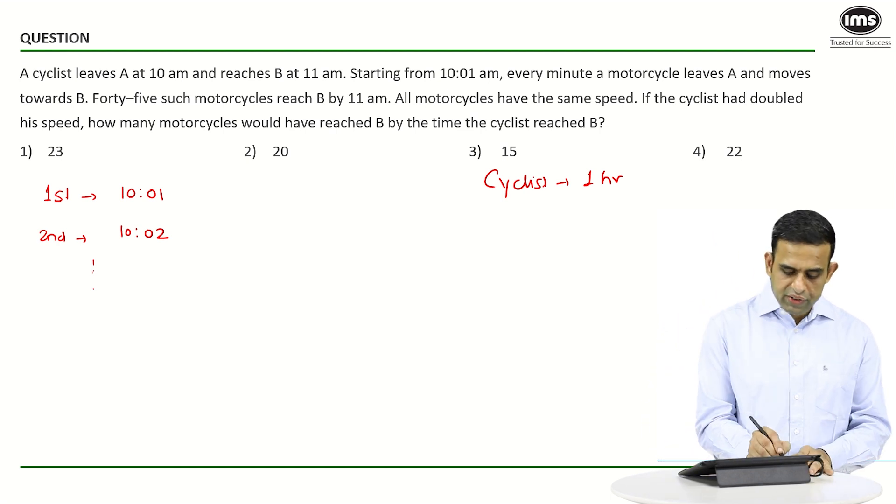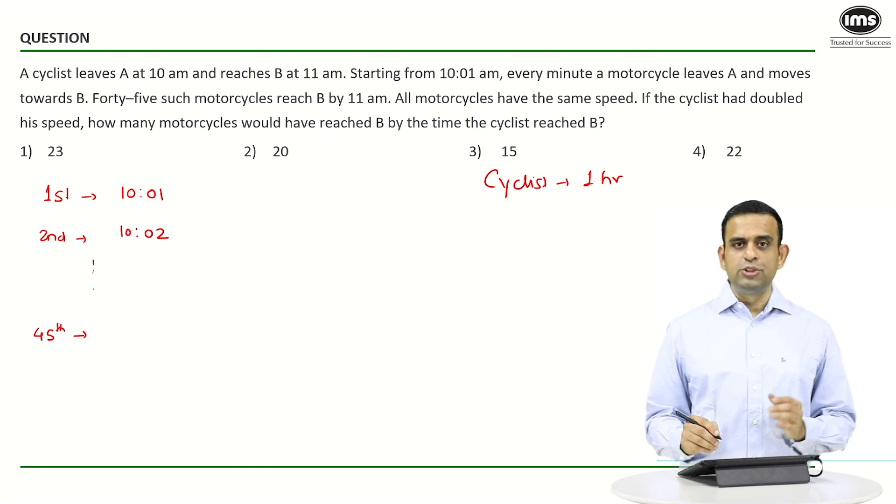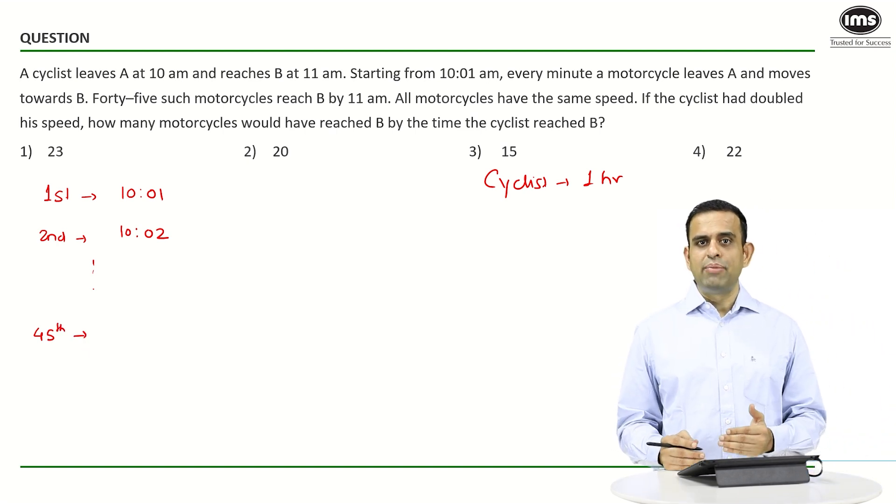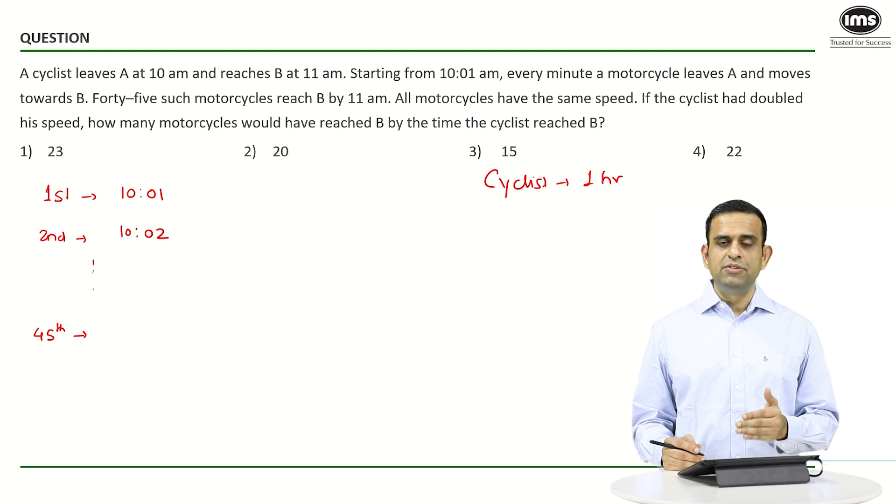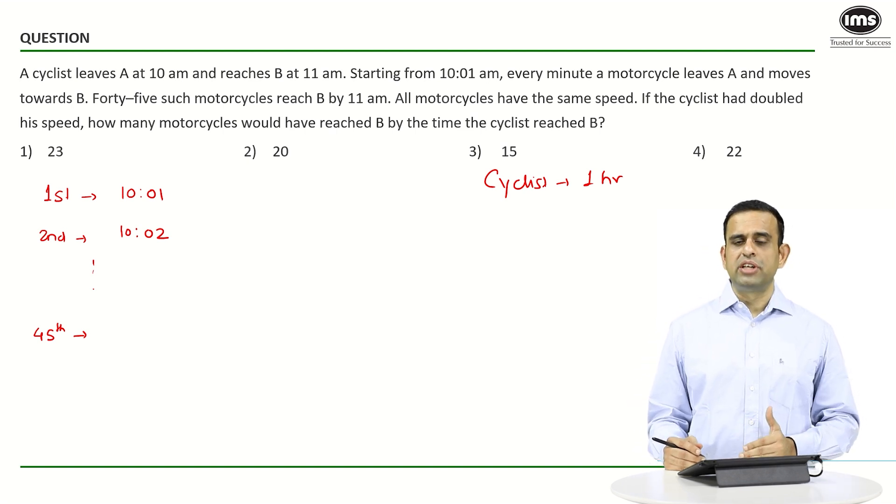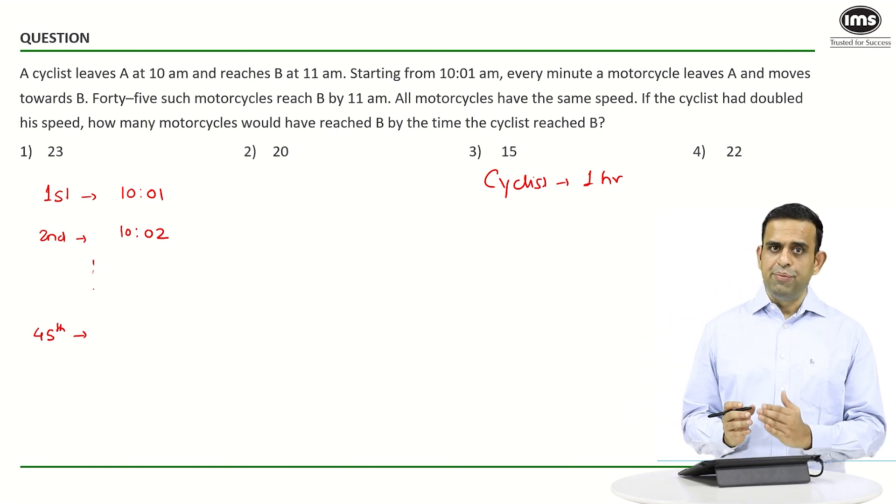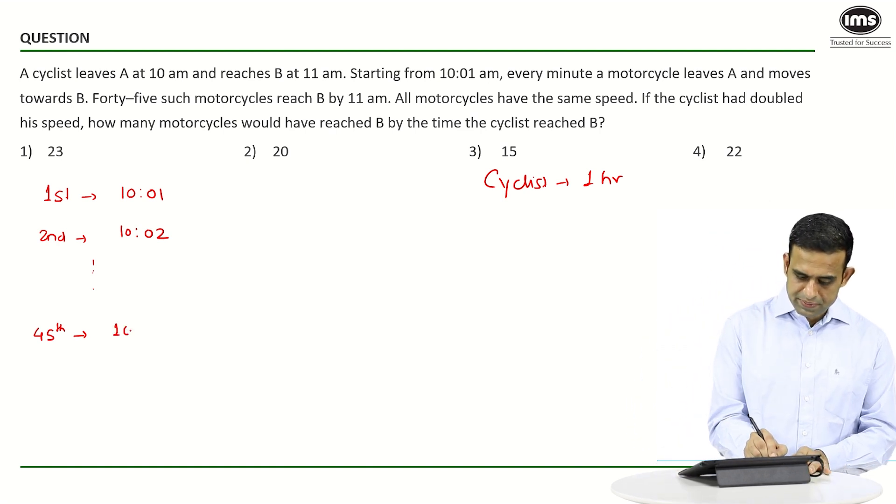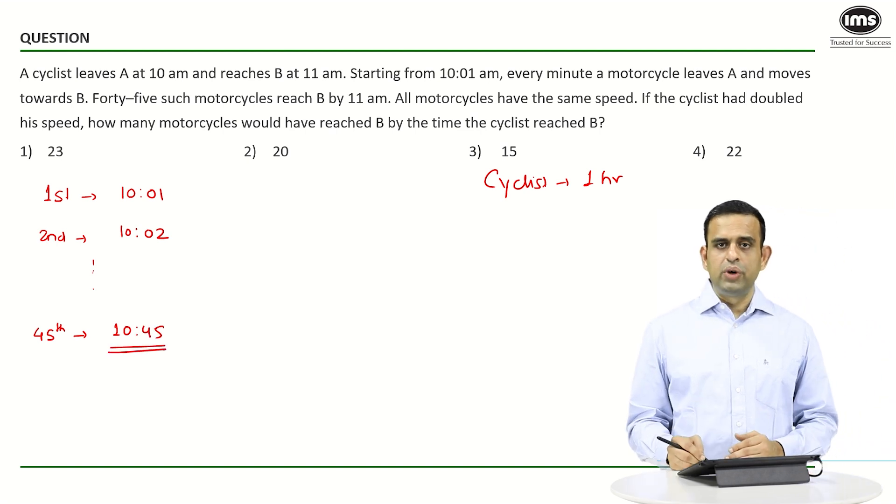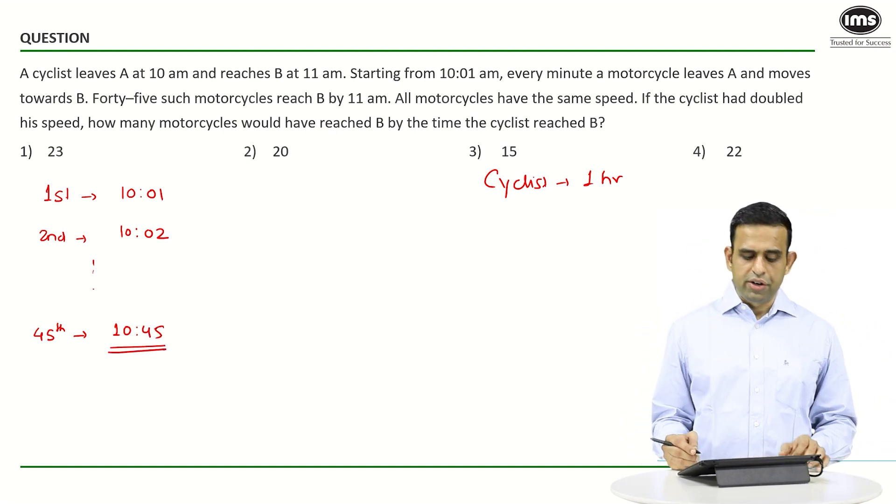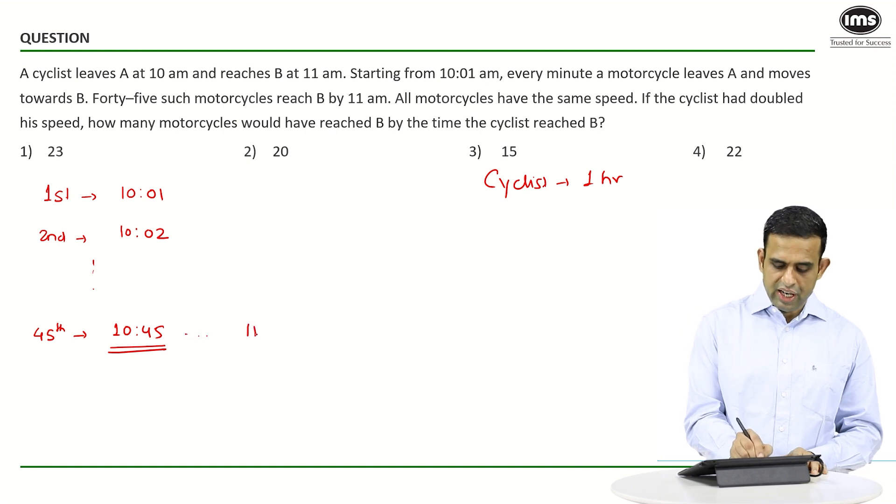The 45th motorcycle starts from point A at 45 minutes past 10, and this motorcycle reaches point B at 11 a.m.